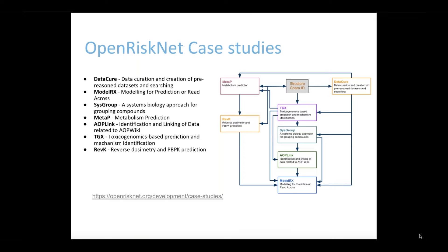The OpenRiskNet case studies are designed to support the full range of risk assessment activities, including data curation and management, machine learning, predictive modeling, read-across, systems biology, metabolism prediction, adverse outcome pathway development, toxicogenomics, and toxicokinetics.